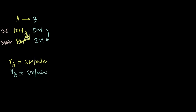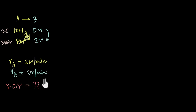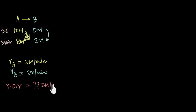Now if I ask you to tell me what the overall rate of this reaction is, out here the rate of disappearance of A is 2 molar per minute and the rate of appearance of B is also 2 molar per minute. So 2 molar of the reactants get converted into 2 molar of products in one minute. So maybe we can put down the overall rate of the reaction as also 2 molar per minute. Seems reasonable.